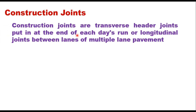First are construction joints, which can be in both directions — transverse as well as longitudinal. Transverse construction joints are made at the end of each day's work, and longitudinal joints are made between lanes of a multi-lane highway. The purpose of such joints is to divide a large pavement area into a convenient size for paving. When pouring of concrete is stopped at the end of the day or suspended for any reason, a construction joint is created.